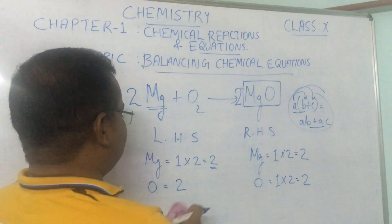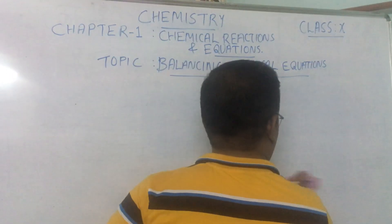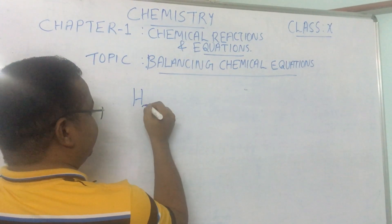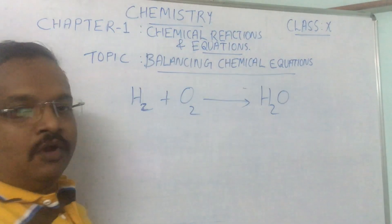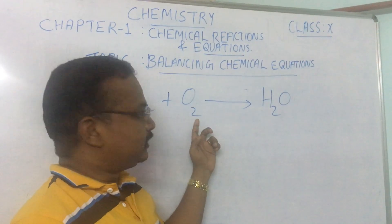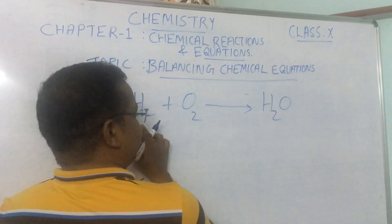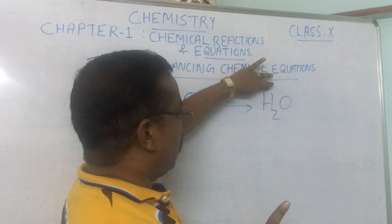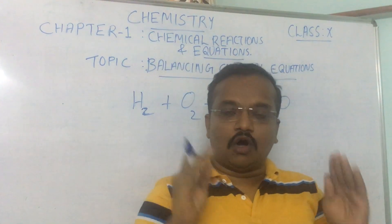If you did not understand that, here is a simpler example — the formation of water. Hydrogen on reacting with oxygen produces the water molecule H₂O. Here, two atoms of hydrogen react with two atoms of oxygen to form one molecule of water. But hydrogen is two on both sides, while oxygen is two on the left but only one on the right. Why is this happening?